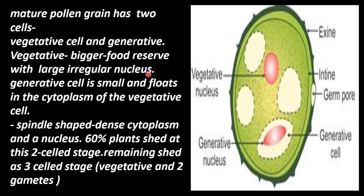The nucleus is very large and irregular. The generative cell is small in size and floats in the cytoplasm of the vegetative cell. It is spindle-shaped with very dense cytoplasm. At this two-cell stage, 60 percent of plants shed the pollen grains.